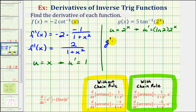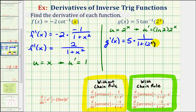So g prime of x would be equal to five times the derivative of the outer function, which would be one divided by one plus u squared, or two to the power of x squared. This is the derivative of the outer function, times u prime, or the derivative of the inner function, which we already found as natural log two times two to the power of x.